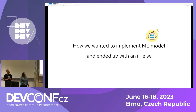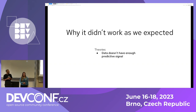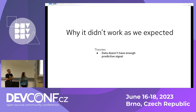The theories for why many machine learning models on your data may perform the same usually come down to the data itself. One theory is that the data we trained on doesn't have enough predictive signal.